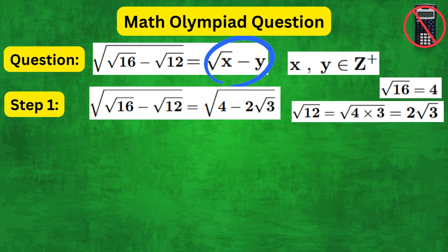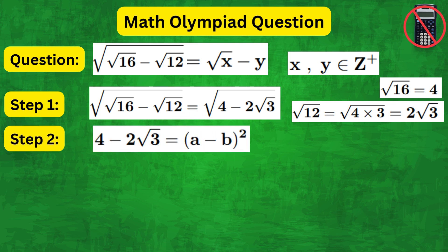Now, comparing with the required form, we recognize that we need to get rid of the outer square root. One way we can do that is by rewriting 4 minus 2 root 3 as a minus b whole squared.